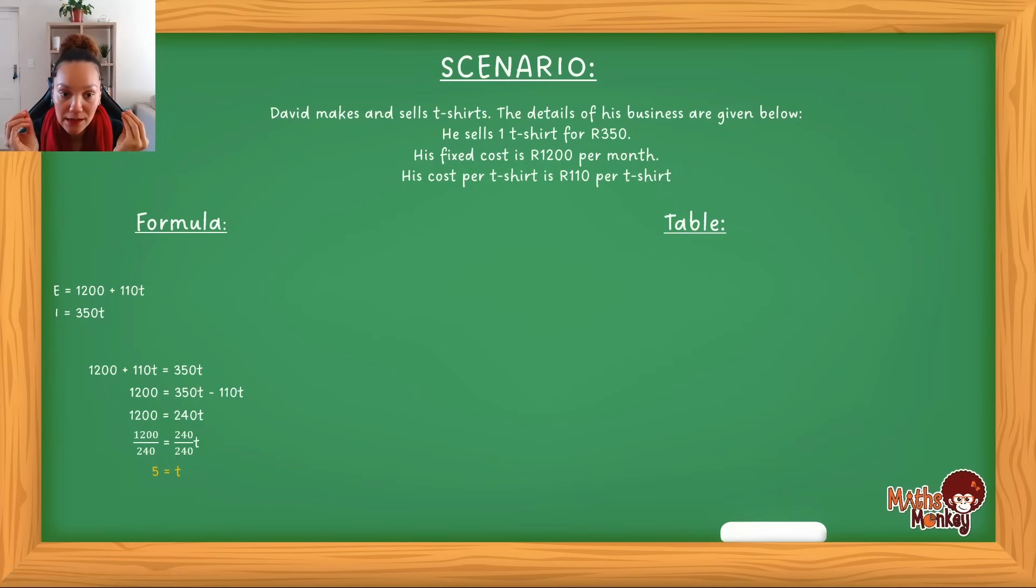Now what does this mean? 5 t-shirts. At the point where we sold 5 t-shirts, that is where our income will equal our expenses. So we will only start making a profit from when we sell t-shirts 6.